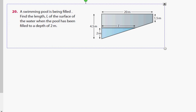A swimming pool is being filled. Find the length L of the surface of the water when the pool has been filled to a depth of 2 meters. Okay, 2 meters. Now, this is an interesting one. I have an idea.